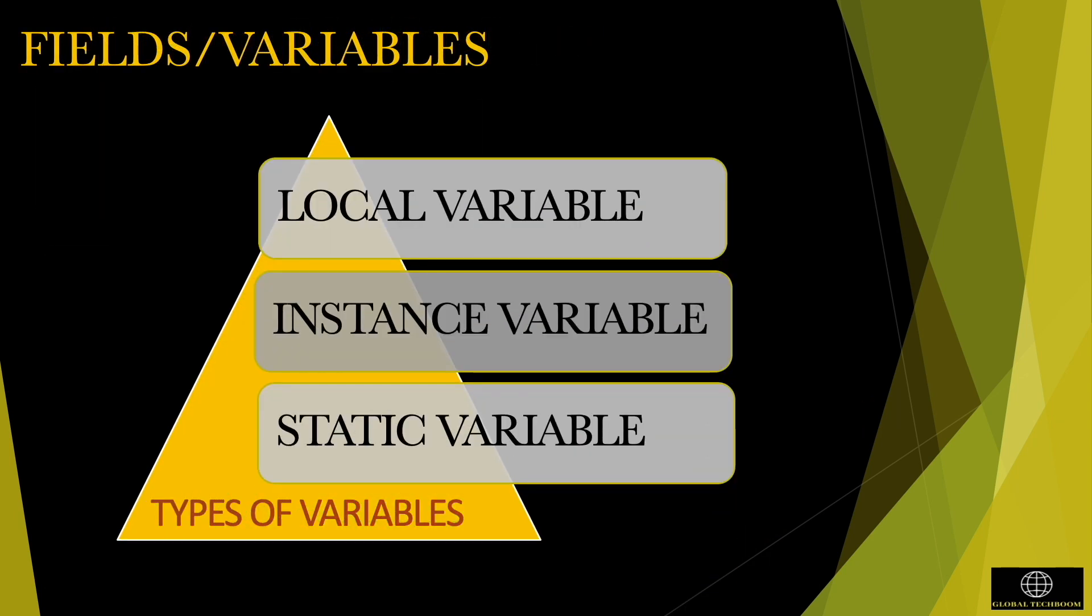Variables hold the value during the execution of Java program. Each variable in Java has a specific type. All the variables must be declared to the compiler before they can be used in the program. There are three different types of variables in Java: local variables, instance variables, class or static variables.